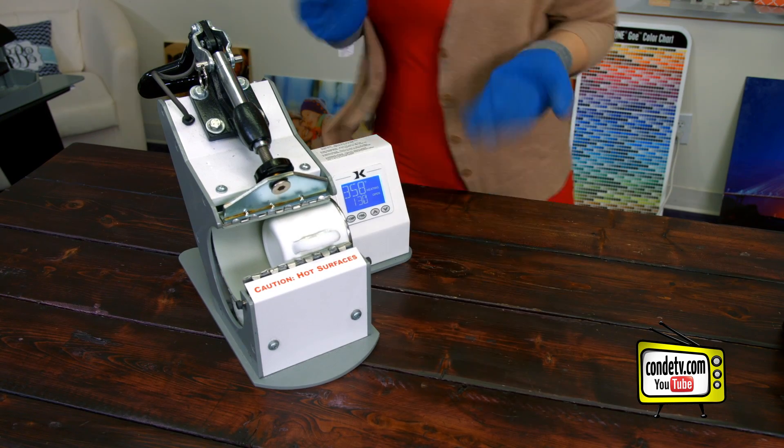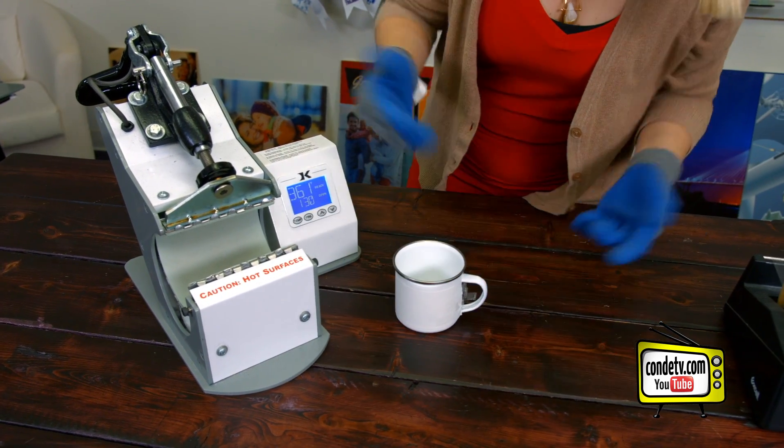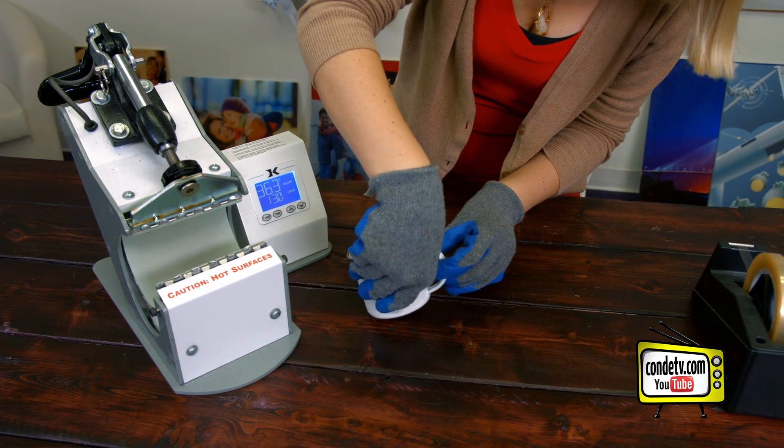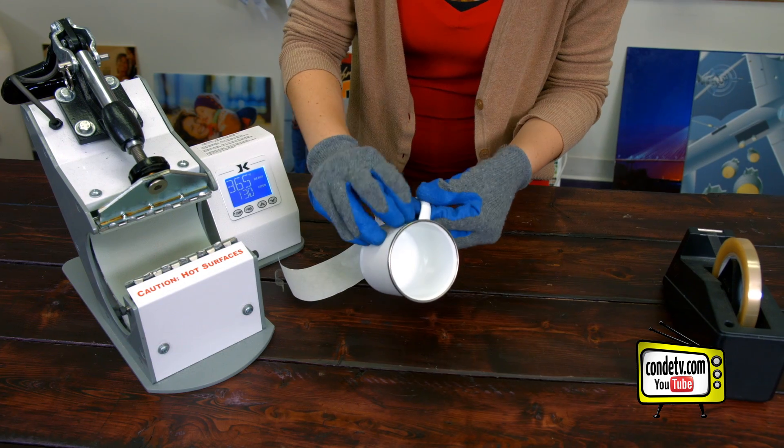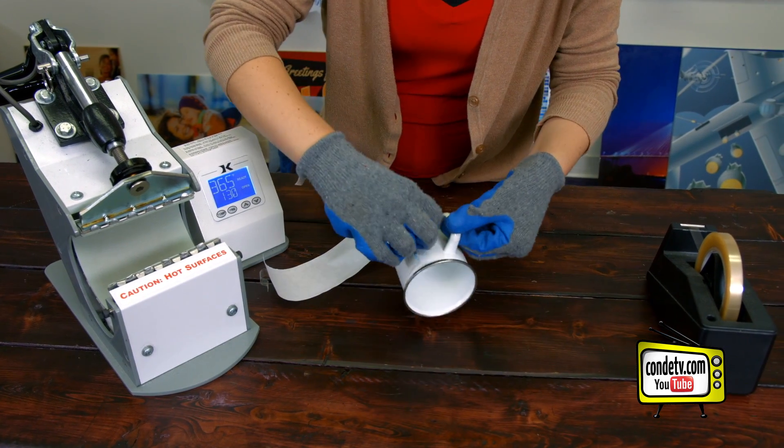And that's our press telling us our camp cup is ready. We're going to remove it, making sure we have our heat gloves on because it's really hot. That metal heats up fast. And we're going to remove our image.